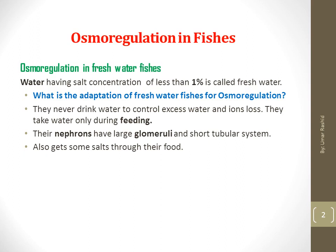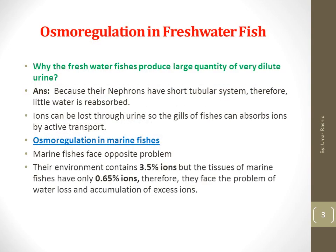Perhaps 90% of all bony fishes are restricted to either a freshwater or seawater habitat because they are incapable of osmotic regulation in the wrong habitat. Most freshwater fishes quickly die if placed in sea water, as do marine fishes placed in freshwater. Freshwater fishes are hyper-osmotic regulators because they can pump out excess water using opistonephric kidneys, which are capable of forming very dilute urine.